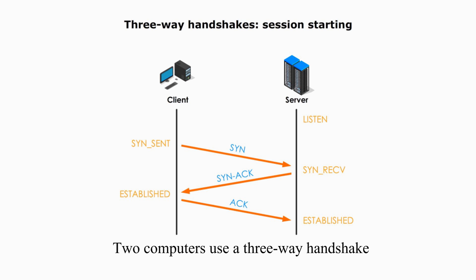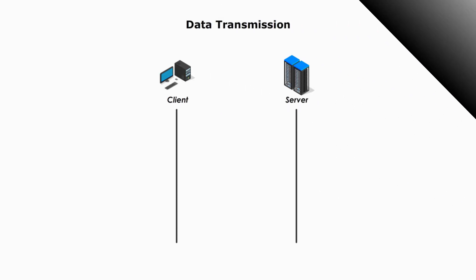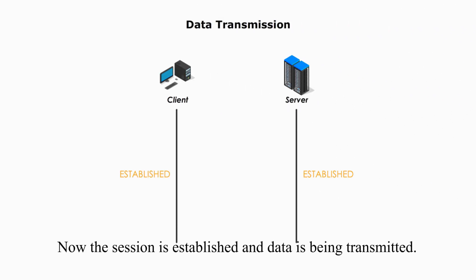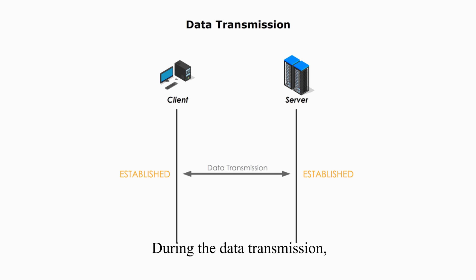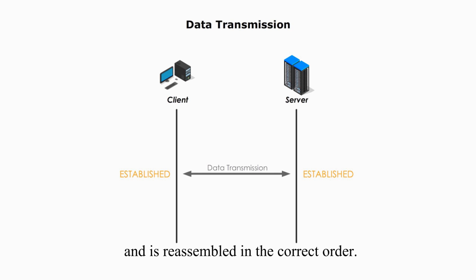Two computers use a three-way handshake to negotiate and start a session before any IP packets get transferred. Now the session is established and data is being transmitted. During data transmission, TCP also guarantees that data is successfully received and reassembled in the correct order.